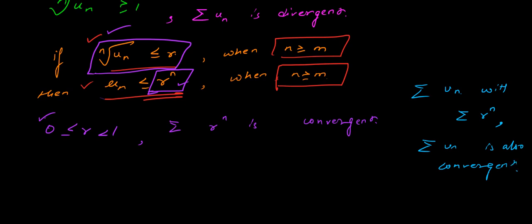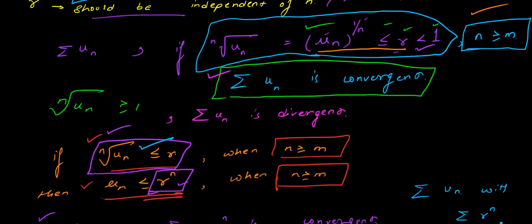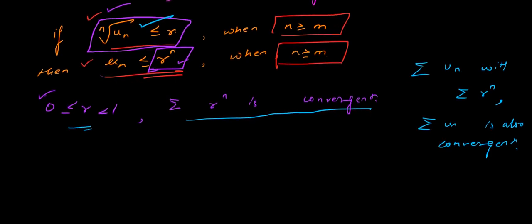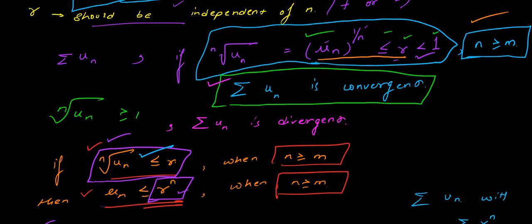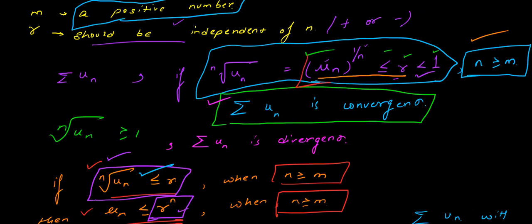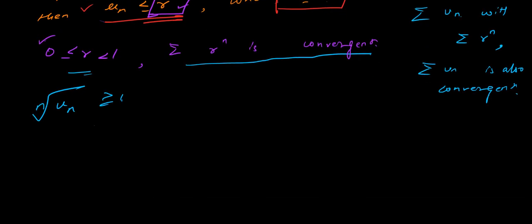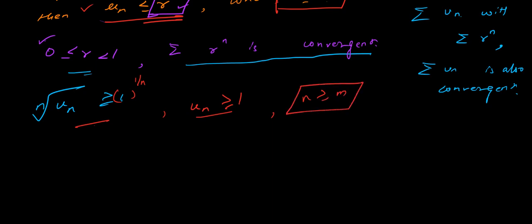On the other hand, if these conditions are not satisfied — if un^(1/n) ≥ 1 — then un ≥ 1. Taking 1 to the power 1/n gives 1, so un will be greater than 1, and with n ≥ 1 always holding, we will have that the summation of un is divergent.